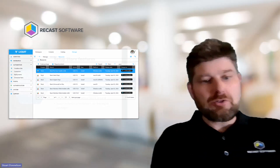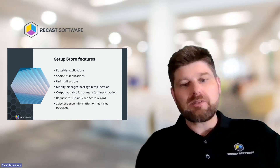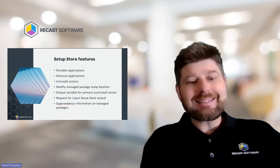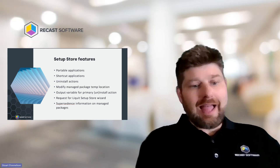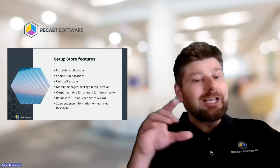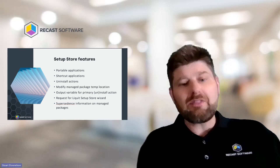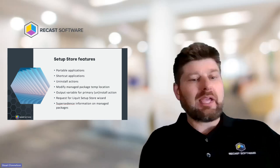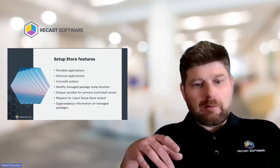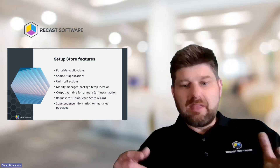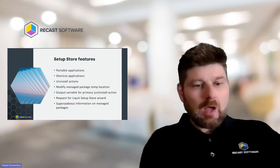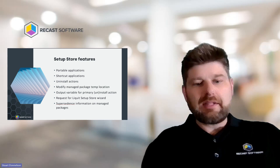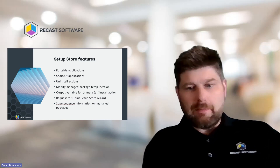Those are some cool major features for Liquid 4.2, but I want to talk about some of the other enhancements that improve your application management experience. First, we've got shortcut applications — you can now create and manage web links and links to native OS applications easily. Second, uninstall actions: you can now include uninstall actions when creating managed packages, along with traditional actions already available via the Liquid Setup Store connector. Third, modifying managed package temp locations — you can now configure the package temp directory variable to define where installation logs are stored, and specify an alternate location if needed. We can also now output variables for primary uninstall applications, so from the Liquid Setup Store connector you can use custom actions and create custom action sets.